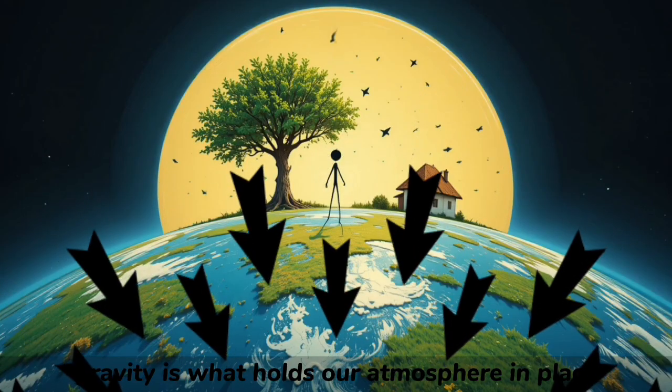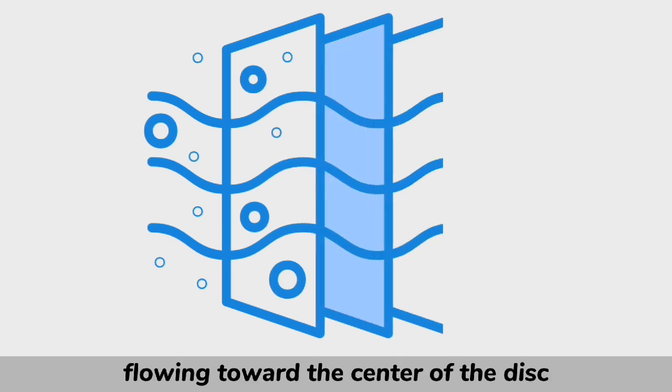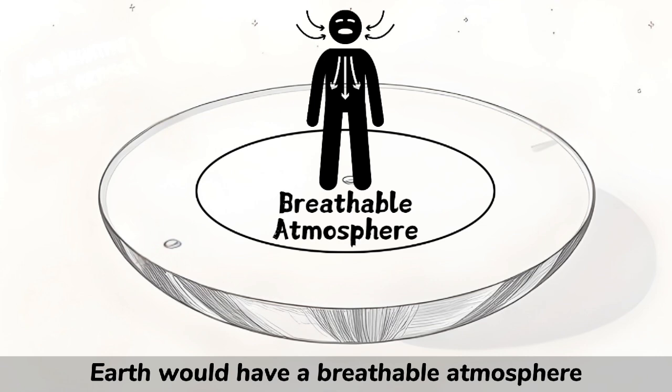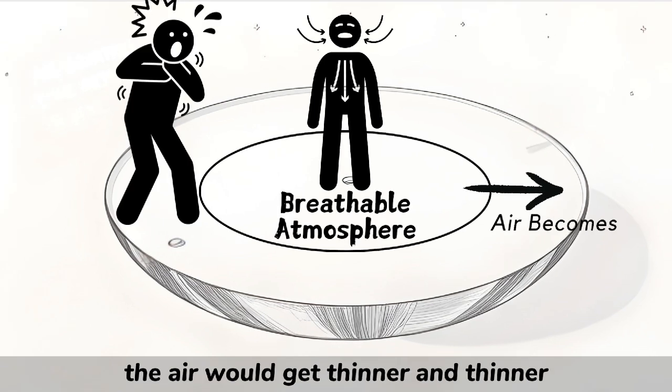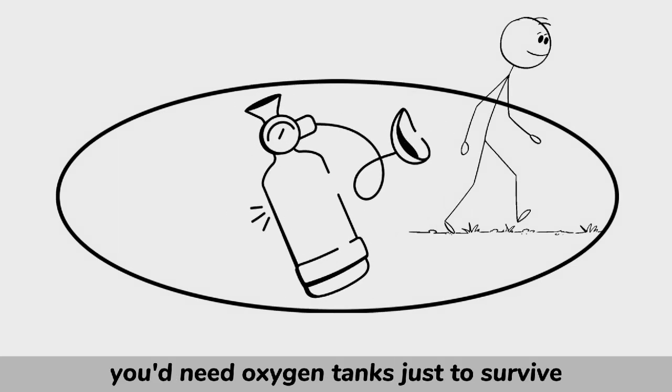Gravity is what holds our atmosphere in place. But on a flat Earth, air would behave like water, flowing toward the center of the disk. This means that only the middle of pizza Earth would have a breathable atmosphere. As you move toward the edge, the air would get thinner and thinner. By the time you were halfway there, you'd need oxygen tanks just to survive.